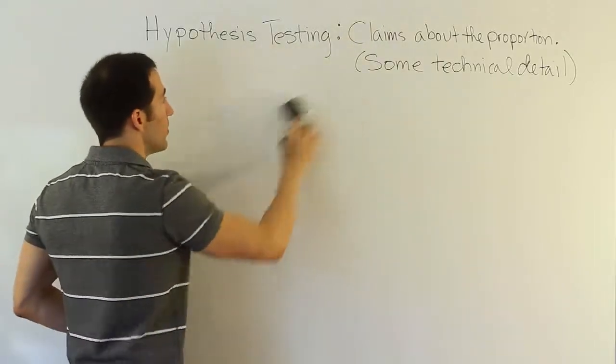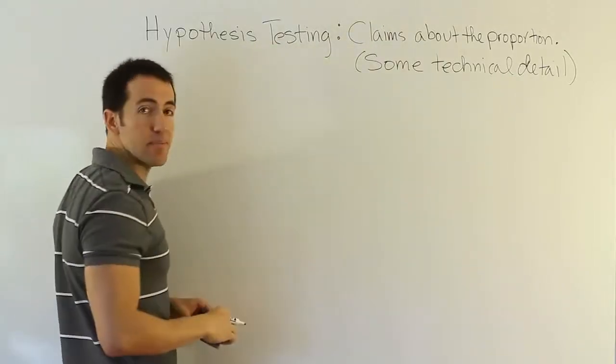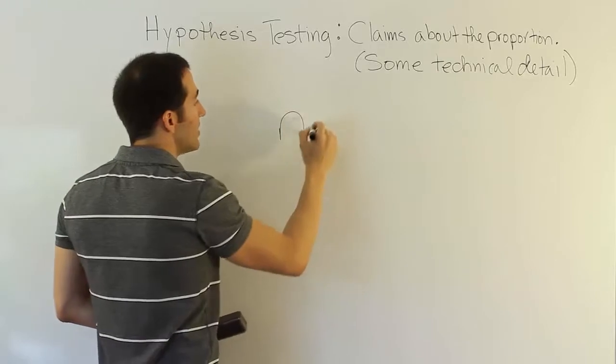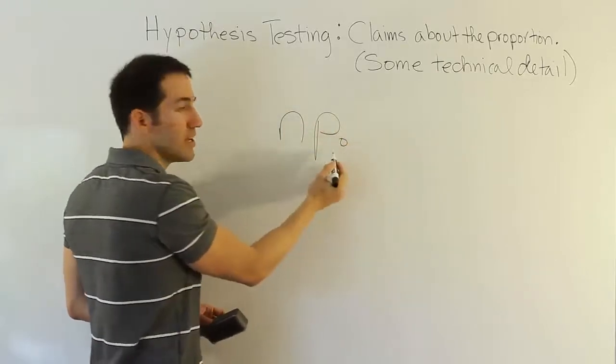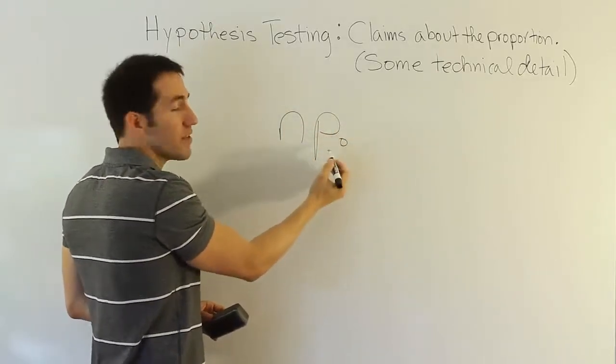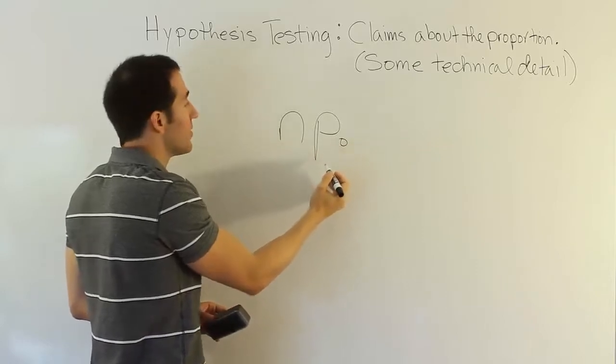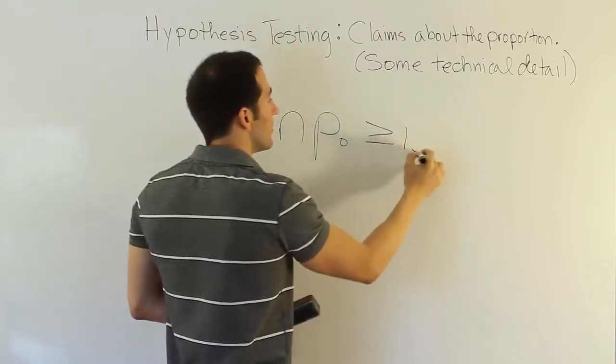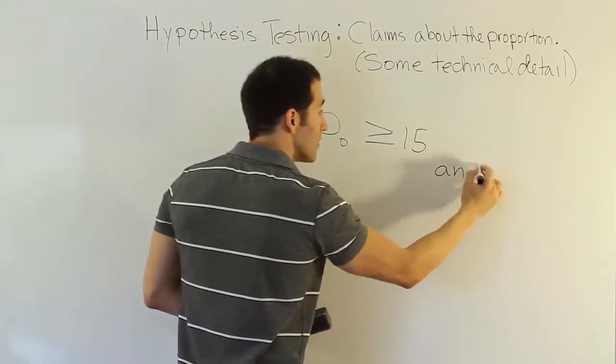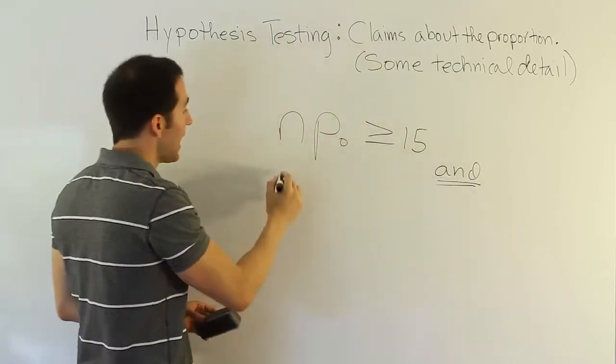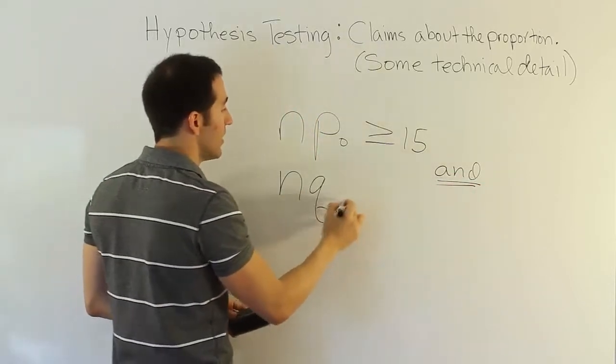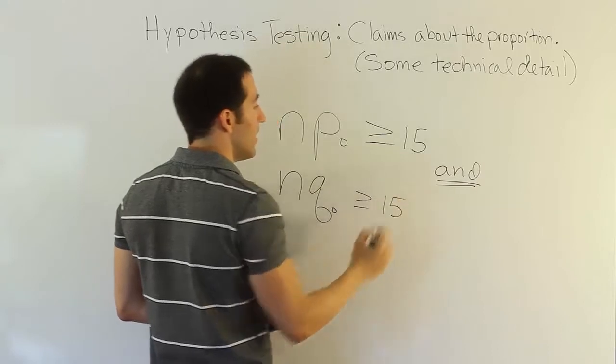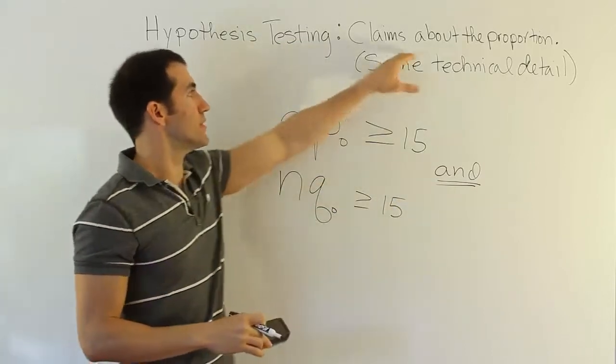The one that I would just say to use because it's very simple is just that if you have n times p0, this p0 comes from your null hypothesis, this is rho0, but it comes from your null hypothesis. As long as that's greater than or equal to 15, so both of these things have to be true, and n times q0 is greater than or equal to 15, then you can usually safely use the procedure we learned earlier.